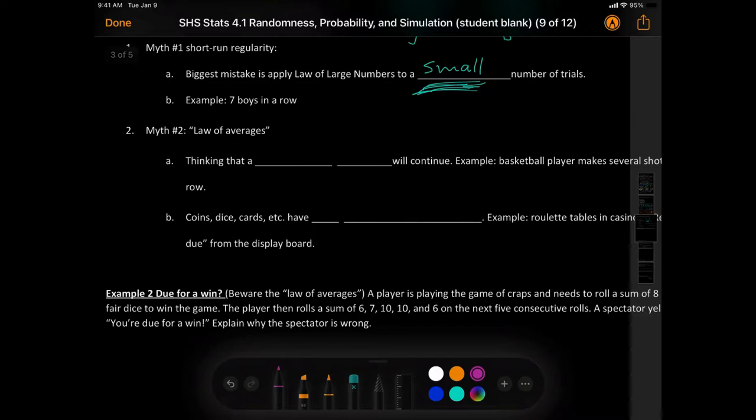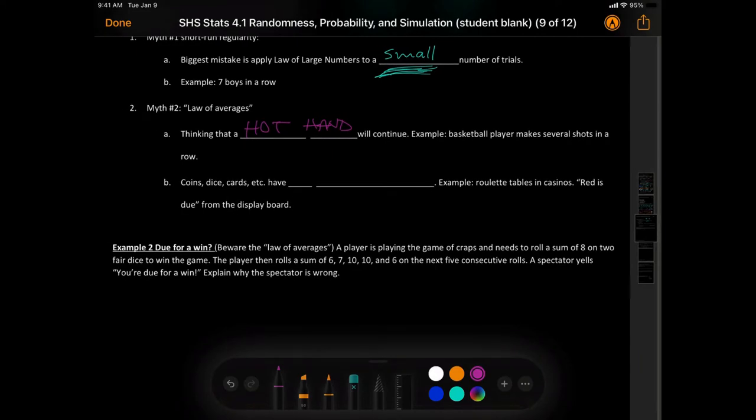The law of averages. Myth number two. The law of averages. This is a lie. So, thinking that a hot hand for those who play sports, especially those who are trying to make a basket, a goal, or something like that, that this will continue. So, imagine a basketball player makes several shots in a row and the announcer says, oh, that person, she's got a hot hand, right? Will that continue on forever? No, we're saying, if you keep going in long terms, we're looking at their shooting percentage or their field goal percentage.